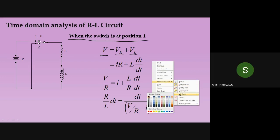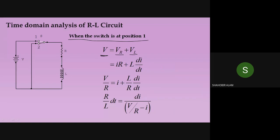A student asks: in the first class you said KVL is not applied for an inductor or capacitor, so why are we applying it here? The answer: KVL is not applied to the inductor or capacitor during the transient period. This is the steady-state analysis — after some time. In the transient period, KVL is not applicable. When the current reaches its final value, the inductor doesn't have any role.